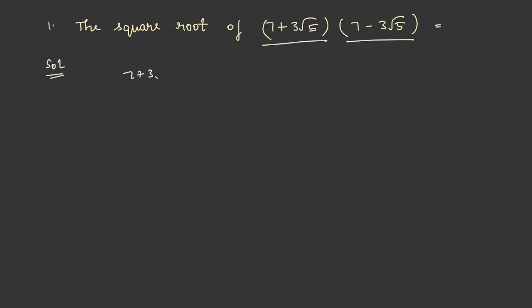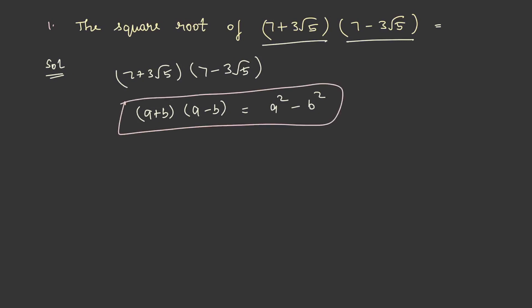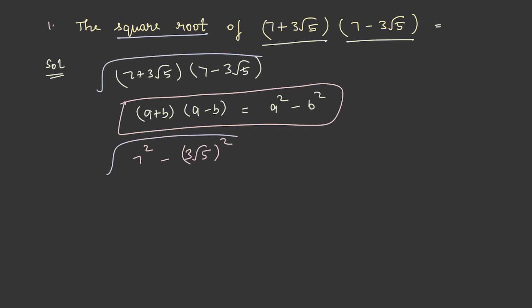Let's solve another basic question: 7 plus 3 root 5, into 7 minus 3 root 5. As we know, the formula a plus b into a minus b is equal to a squared minus b squared. Taking this formula into account, we get 7 squared minus (3 root 5) whole squared.